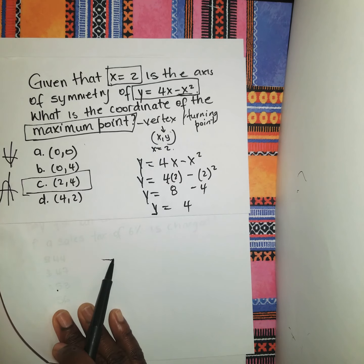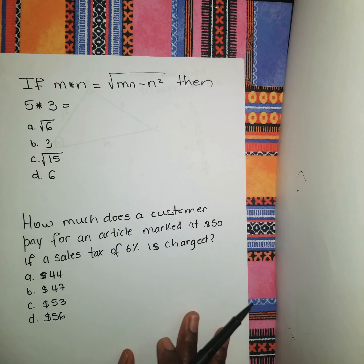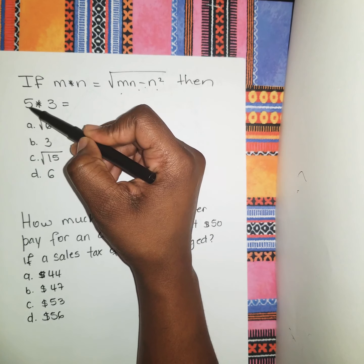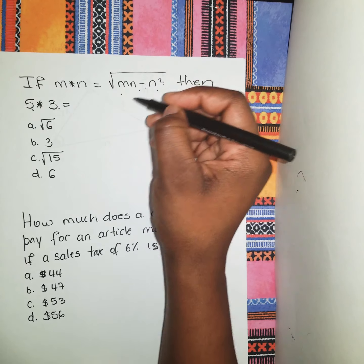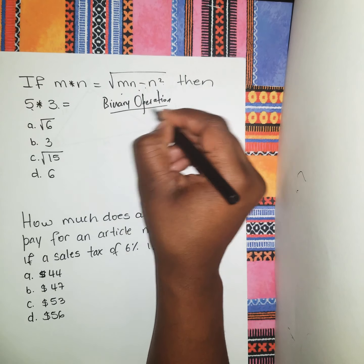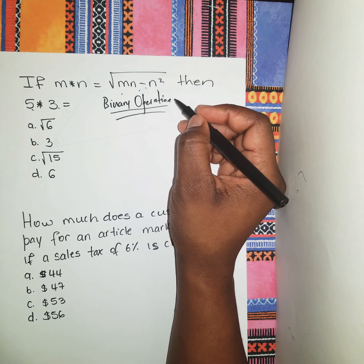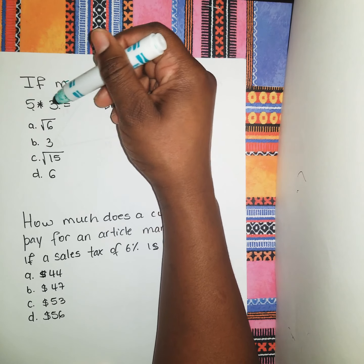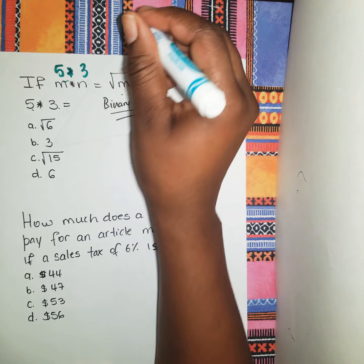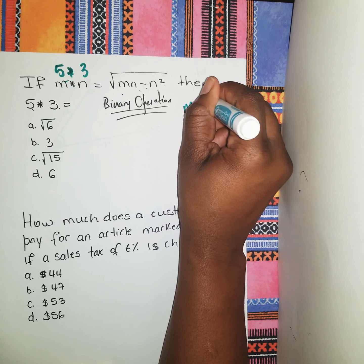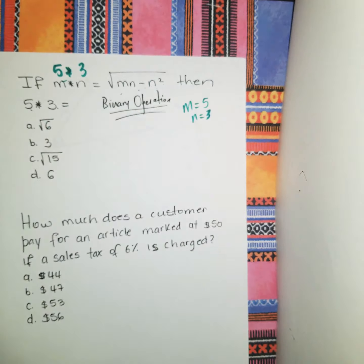All right guys, let's continue. If we're given m * n = √(mn - n²), then 5 * 3 is equal to? Again guys, this is basically under the section binary operation. What I normally tell my students to do is basically do a line up, meaning whatever letters you're given, you line them up with the numbers you have. So 5 * 3. If you line them up, m = 5, n = 3. So guys, you line them up, after you finish lining them up, you go ahead and you substitute into the given expression.